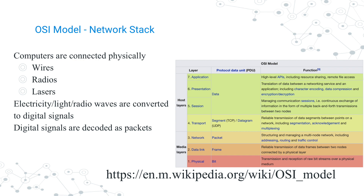On top of the physical layer, there are other layers to control how data flows and is understood by various computers and applications. Moving up the stack to the data link layer, the most popular protocols you know are Ethernet or Wi-Fi — this is layer two. You may have heard of other data link layer protocols such as token ring. This layer gives us the reliable transmission of data between two nodes connected by a physical layer.